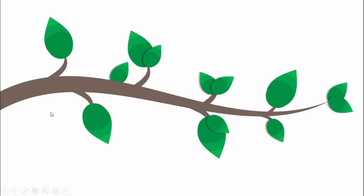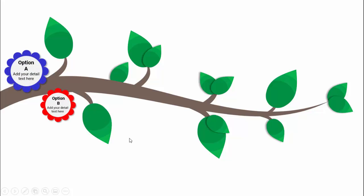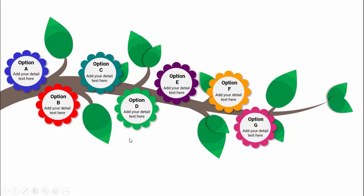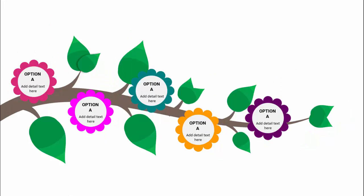In today's tutorial I'm going to show you how to make an eight flower options infographic slide in PowerPoint. When I click, the stem with leaves comes out, and on the next click each flower with options will come one by one — option A, B, C, D, E, F, G, and H. I've also created one more slide with only five options, so depending on your requirement you can choose the slide.